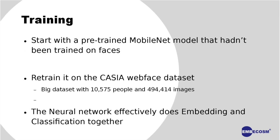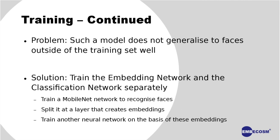This worked surprisingly well — we were seeing about 70% test accuracy, which was pretty good. But training the model this way came with at least one major problem: the model really didn't generalize well to faces outside of the training set. This isn't ideal — it would be nice if our facial recognition model could work on faces not just inside our training set but could easily be adapted to faces outside it, since it's difficult and time-consuming to retrain, and we don't want adding new faces to be hard.